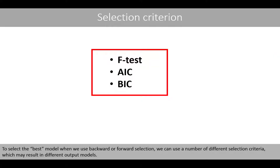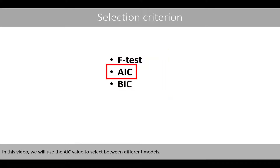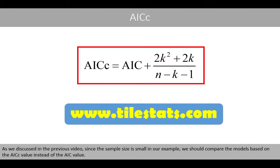To select the best model, when we use backward or forward selection, we can use a number of different selection criteria, which may result in different output models. In this video, we will use the ISE value to select between different models. As we discussed in the previous video, since the sample size is small in our example, we should compare the models based on the ISE value instead of the AIC value.